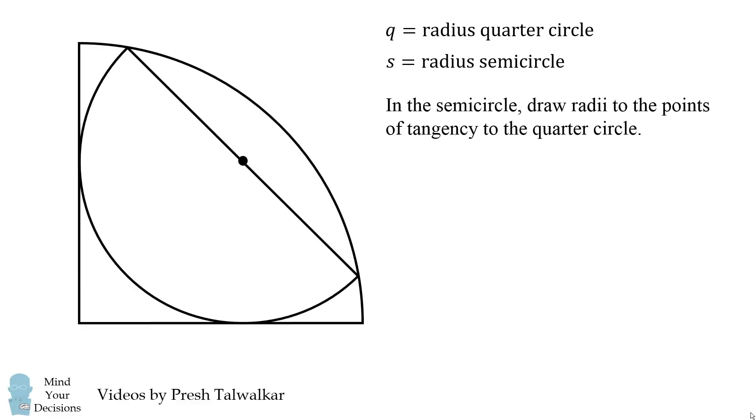What would happen if I connect the center of the semicircle and draw a radius to the tangency of the quarter circle? So what if I drew one of these lines? Since the semicircle is tangent to the quarter circle, this is a right angle, and the line segment will have a value equal to the radius of the semicircle, so it's equal to s.